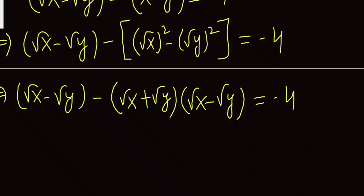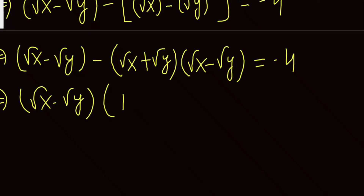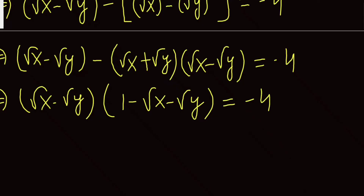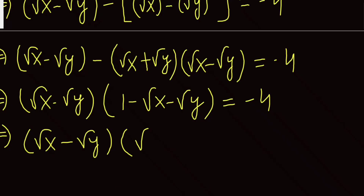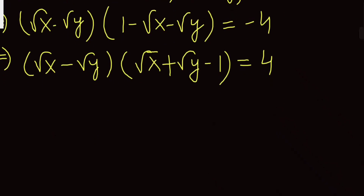We see that (√x minus √y) is common in both terms, so we factor it out: (√x − √y) × (1 − √x − √y) equals negative four. Taking the negative sign out further, this becomes: (√x − √y) × (√x + √y − 1) equals four. Now we have a product of two expressions equal to four.